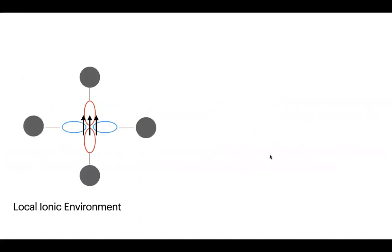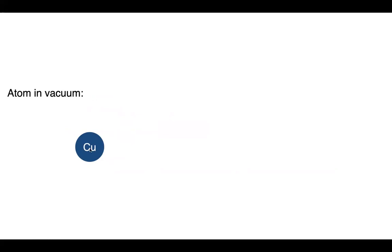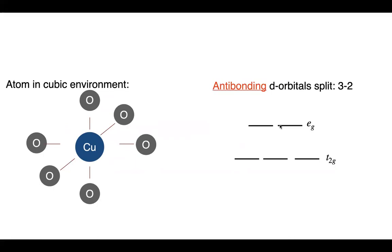Now, the local ionic environment and how it was used to understand cuprate superconductors and predict nickelates. Take a copper atom in vacuum — its d orbitals are degenerate by spherical symmetry. Place it in a cubic environment and you get crystal field splitting: the eg and t2g orbitals split into a two-three splitting. With a Jahn-Teller distortion — or intrinsically in a Ruddlesden-Popper compound — you get a further splitting: one orbital singly and then two.